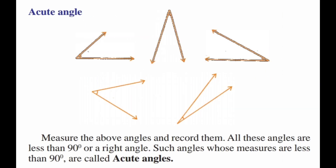Next, acute angle: measure the above angles and record them. All the angles are less than 90 degrees. Such angles whose measures are less than 90 degrees are called acute angles. For example, 10 degrees and 80 degrees are acute angles. Any angle less than 90 degrees is an acute angle.